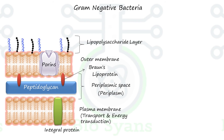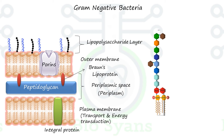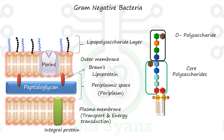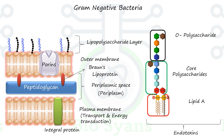This lipopolysaccharide has three components: O-polysaccharide, core polysaccharide, and lipid A. Lipid A is called endotoxin, which triggers an immune response. The plasma membrane and cell wall — including the outer membrane, peptidoglycan layer, and periplasm — form the gram-negative envelope.